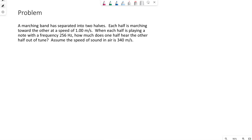We have an example problem here. A marching band has separated into two halves. Each half is marching towards the other at a speed of 1 meter per second. When each half is playing a note with a frequency 256 hertz, how much does one half hear the other half out of tune? Assume the speed of sound in air is 340 meters per second.